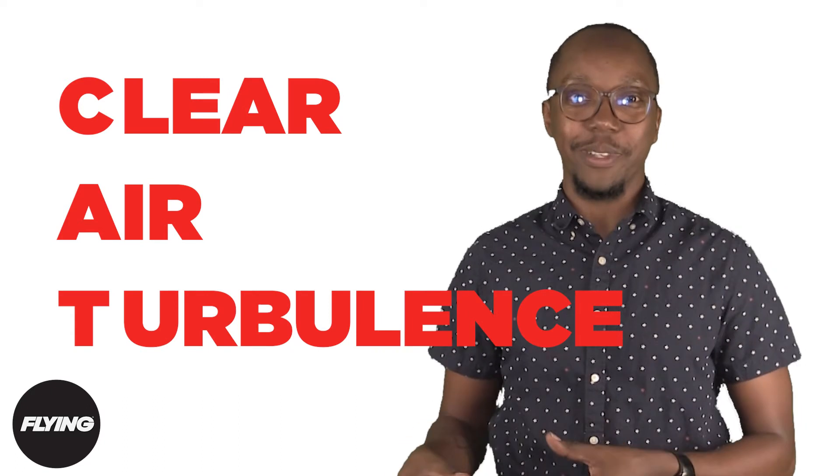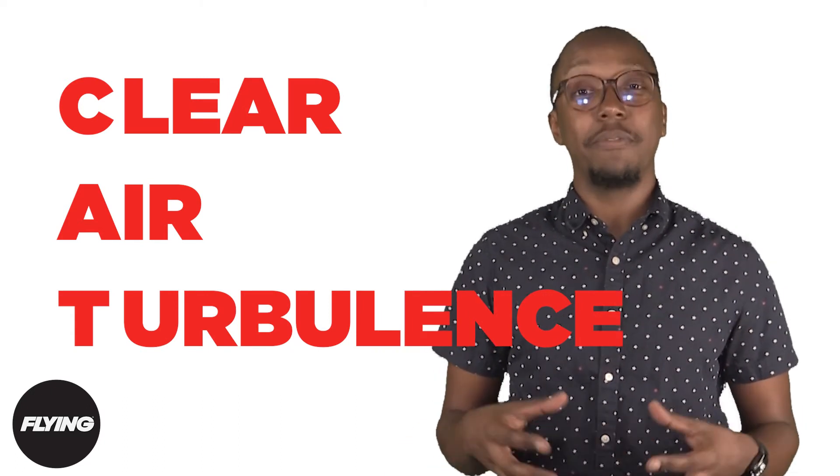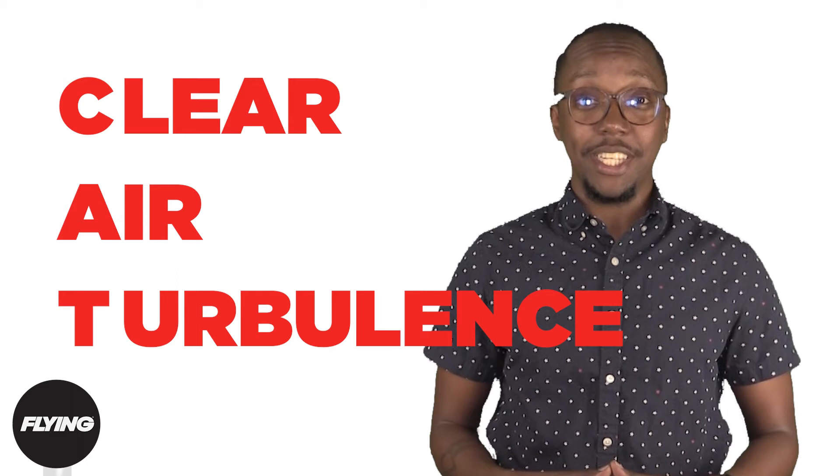But Jeremy, you may ask, where does turbulence come from? And I'd say CAT. Okay, not cats plural, but CAT, as in clear air turbulence. This type of turbulence occurs above 15,000 feet and can happen without any visual indications.